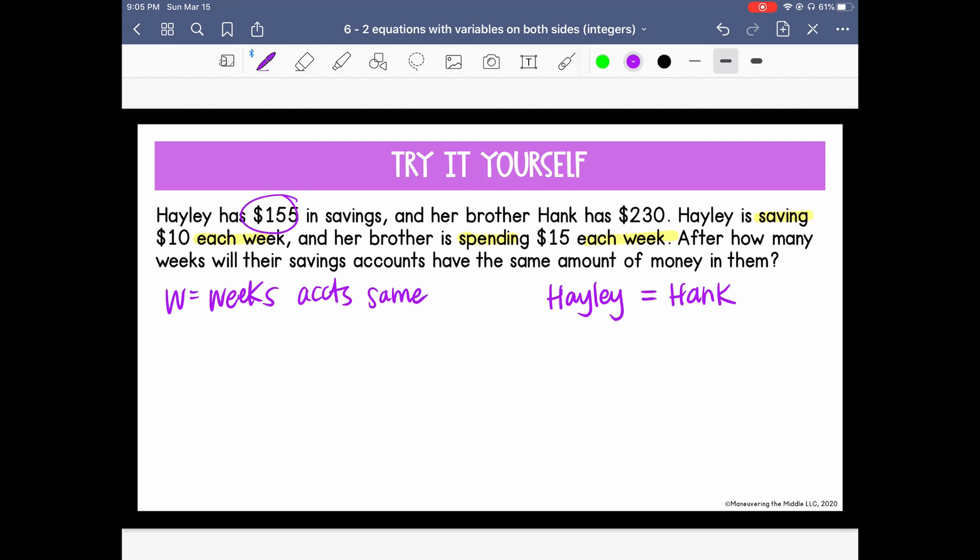she has $155. So I'm going to write that value and we know she is saving. So saving means she's adding to the account and she's adding 10 each week. So I'm going to say that she is adding 10 and each means we would multiply it by the number of weeks.